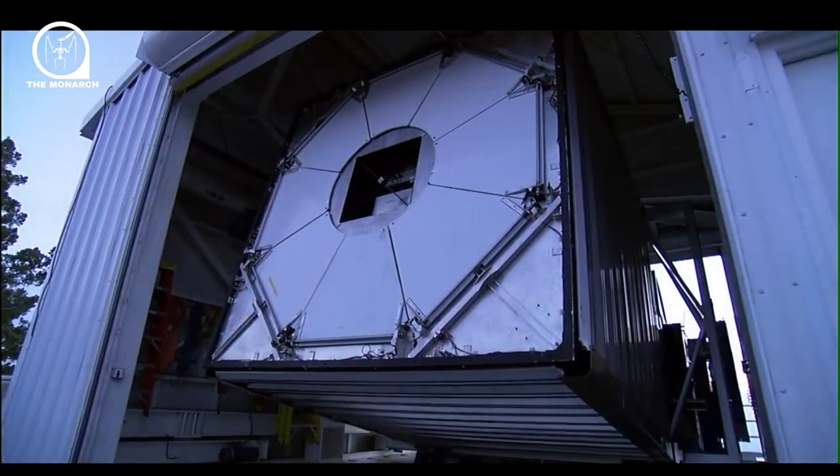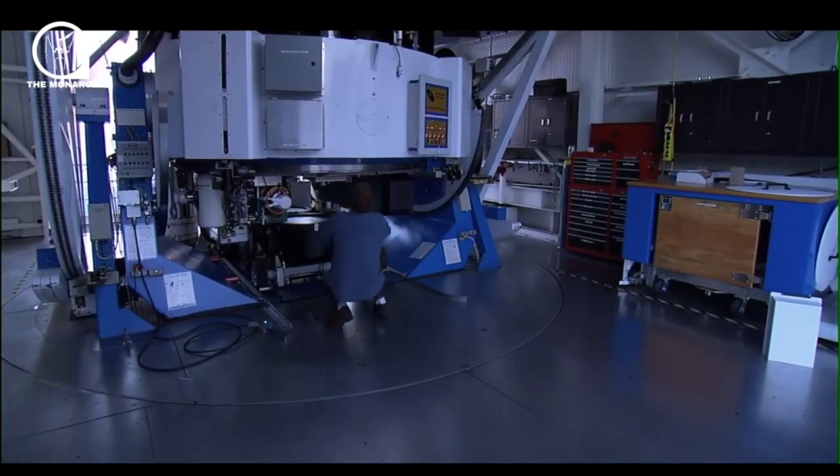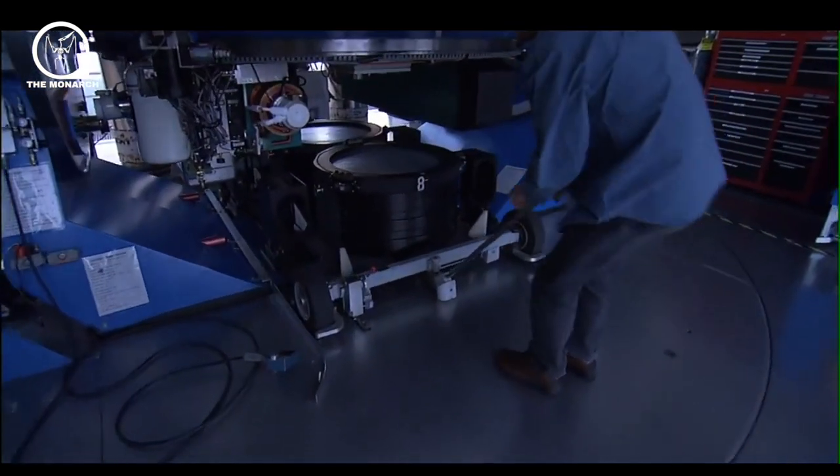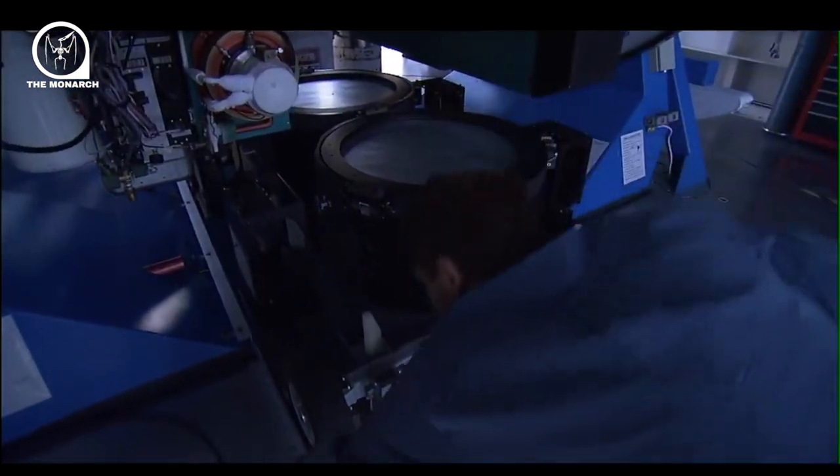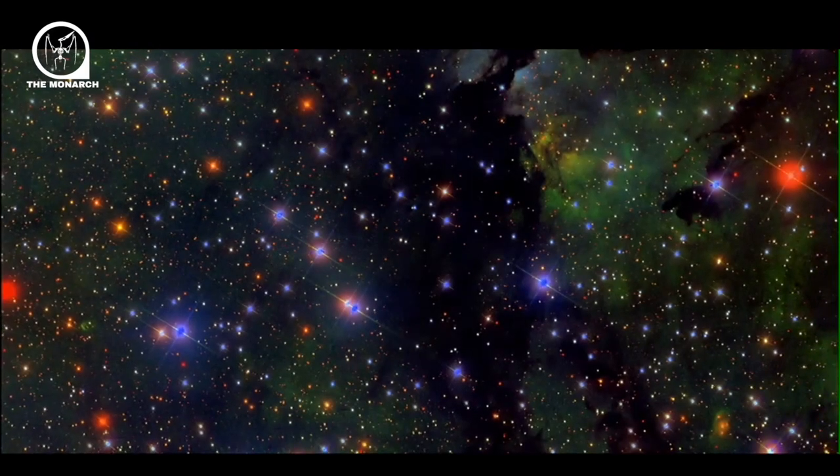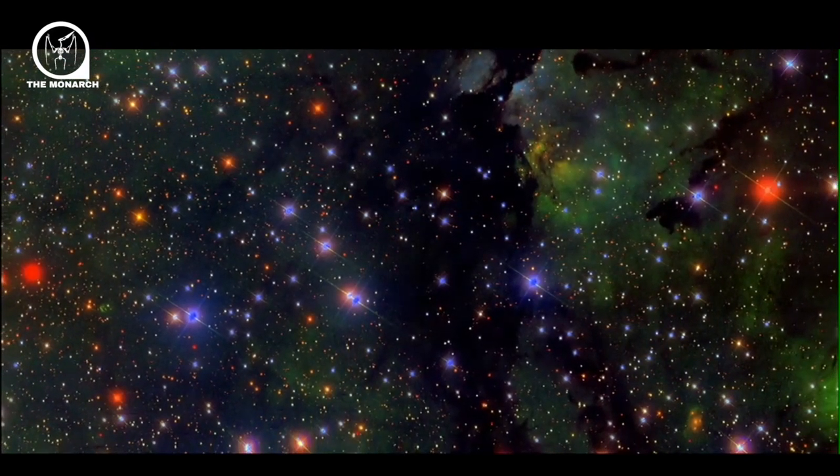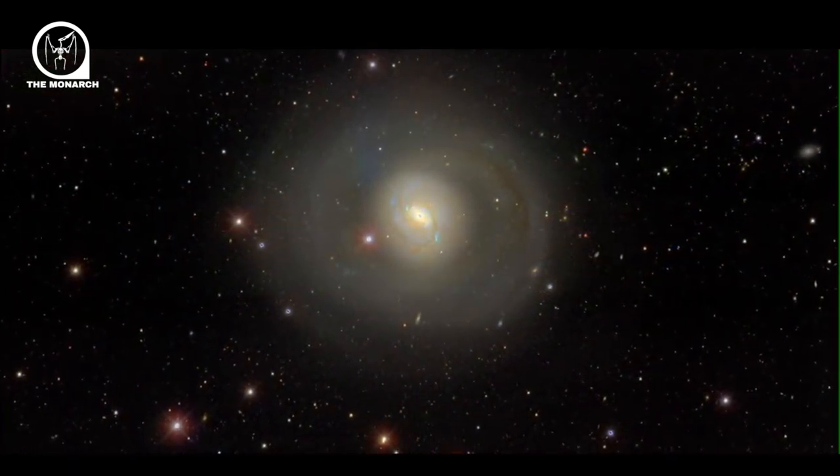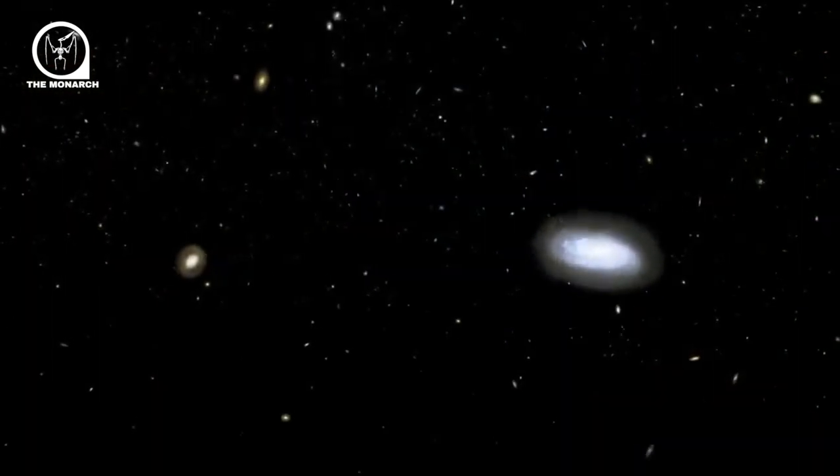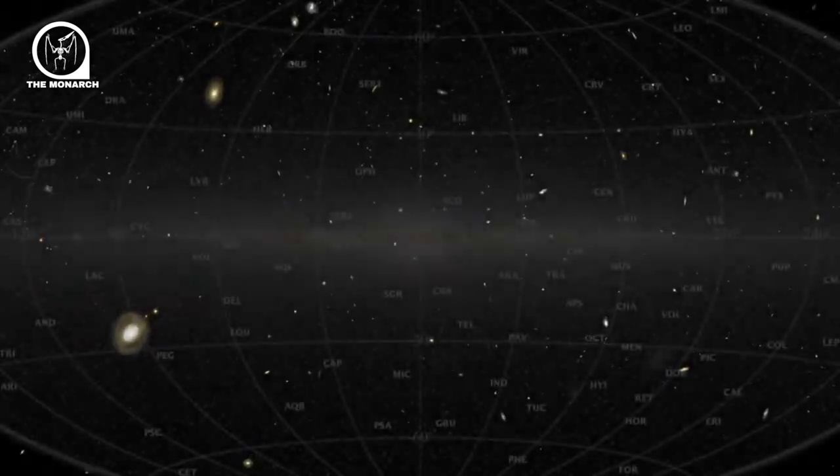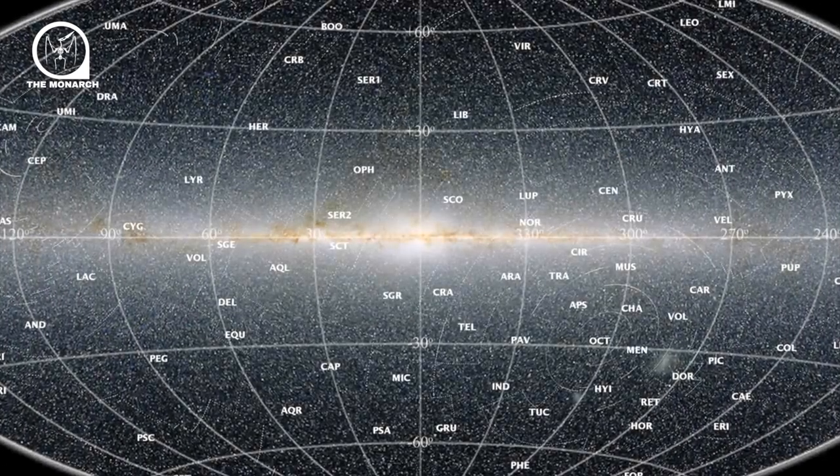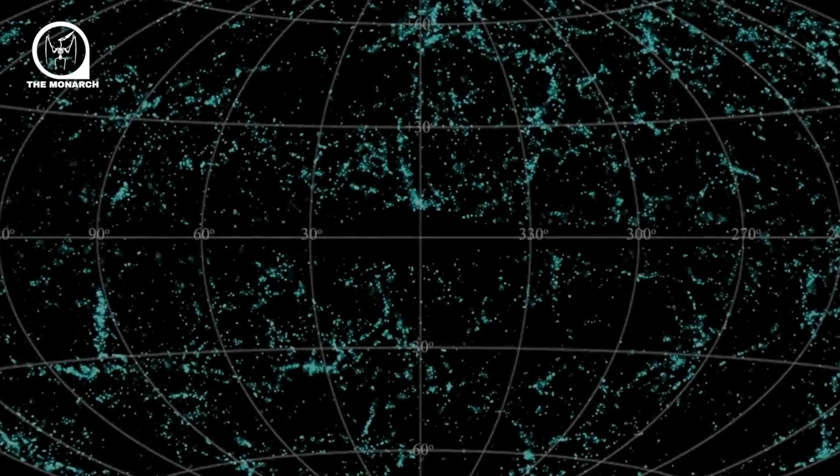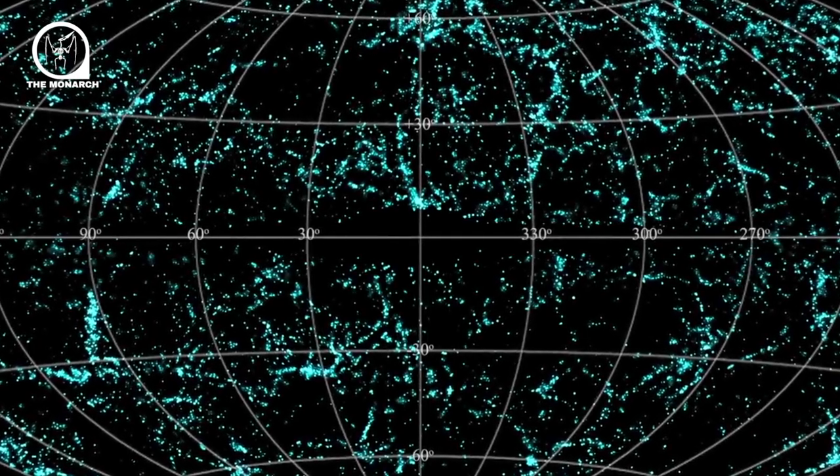Another survey is named the Two Micron All-Sky Survey, or 2MASS, after the frequency of infrared light its detectors are tuned to capture. In this image, the 2MASS data covers a region 60 million light-years across. The local group of galaxies including the Milky Way are in the center. This is our intergalactic neighborhood.